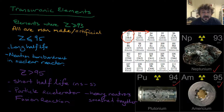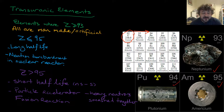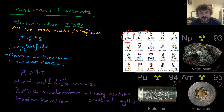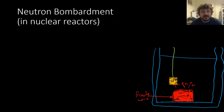The elements with Z greater than 95 are made along with other radioisotopes in particle accelerators. We basically smash heavy nuclei together, and this is a fusion reaction, which is different to a fission reaction. So let's have a quick look at how neutron bombardment works.